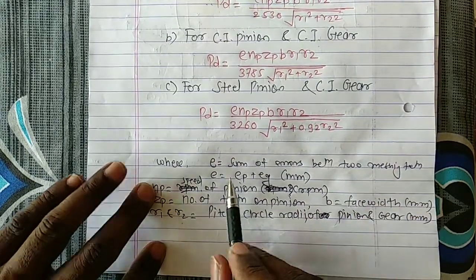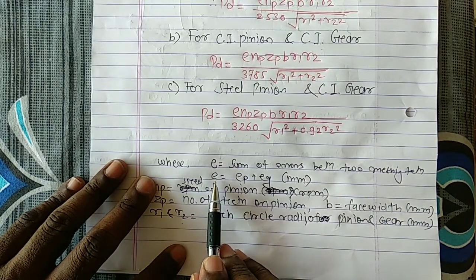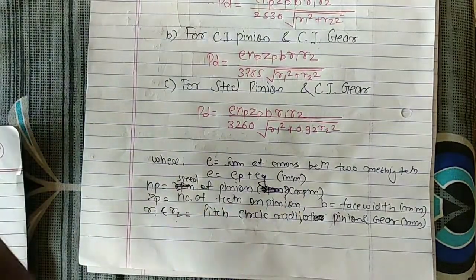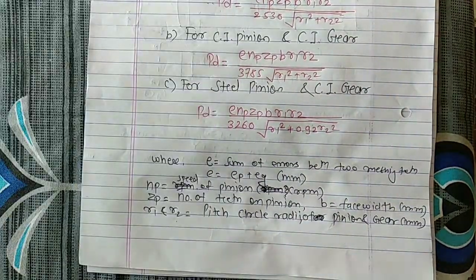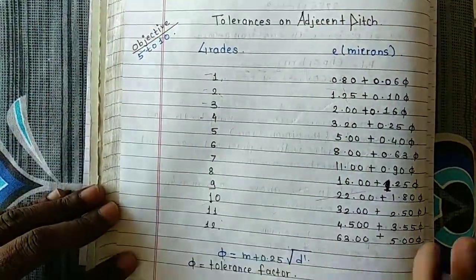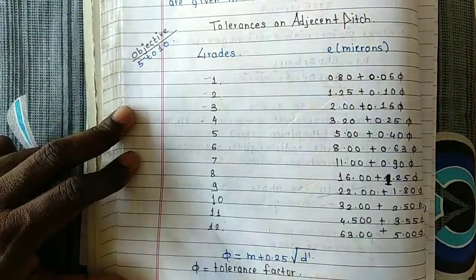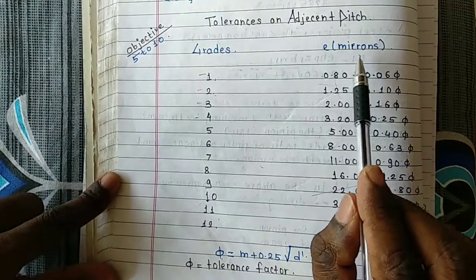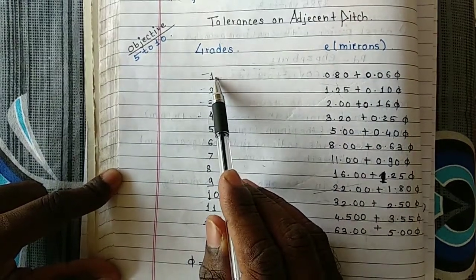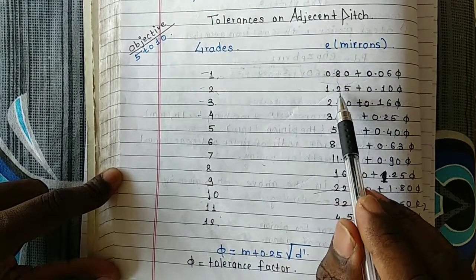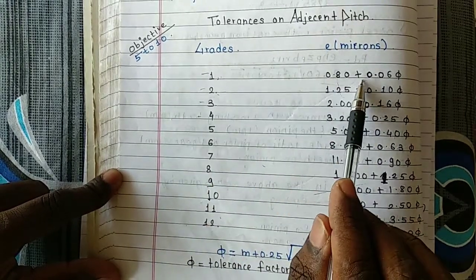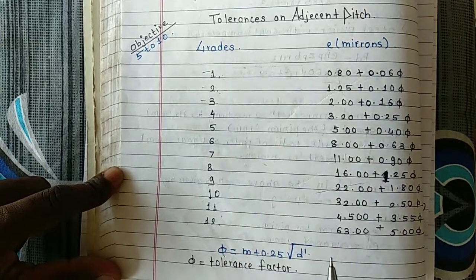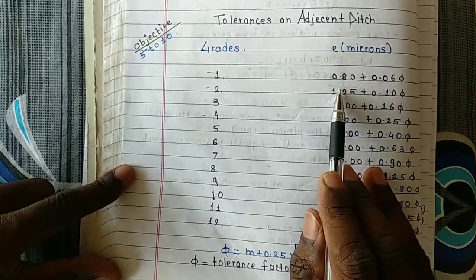Now we will see how to calculate the values of errors for the pinion and gear. These values are given in a chart where errors depend on their grade. There are grades 1 to 12, and the errors are specified in microns. As the grade number increases, the level of precision decreases — grade 1 is most precise, grade 12 is least precise.